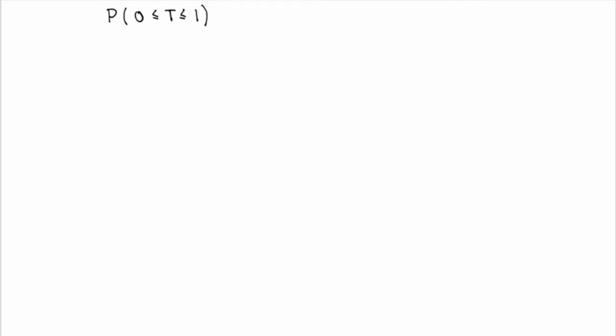So mathematically, we would denote that as P, for probability, that capital T — the waiting time — is between zero and one minute. And now we can define an object called a probability density function. This is a function P of T.